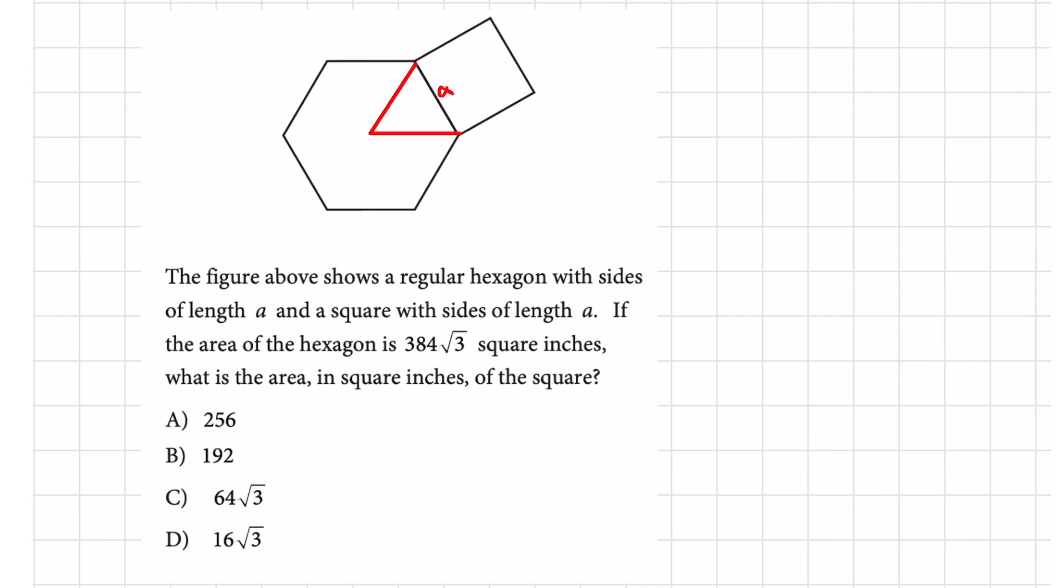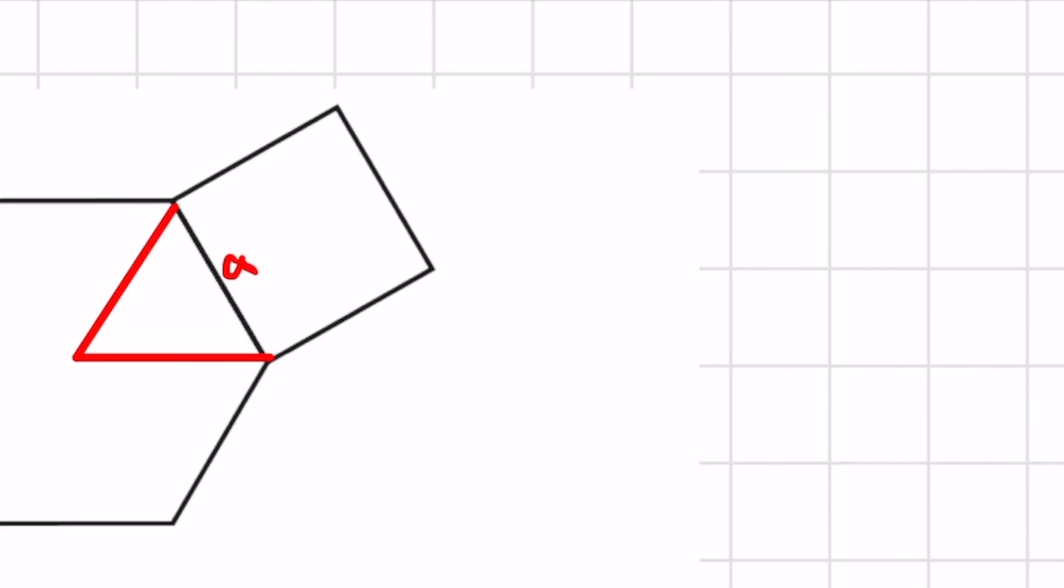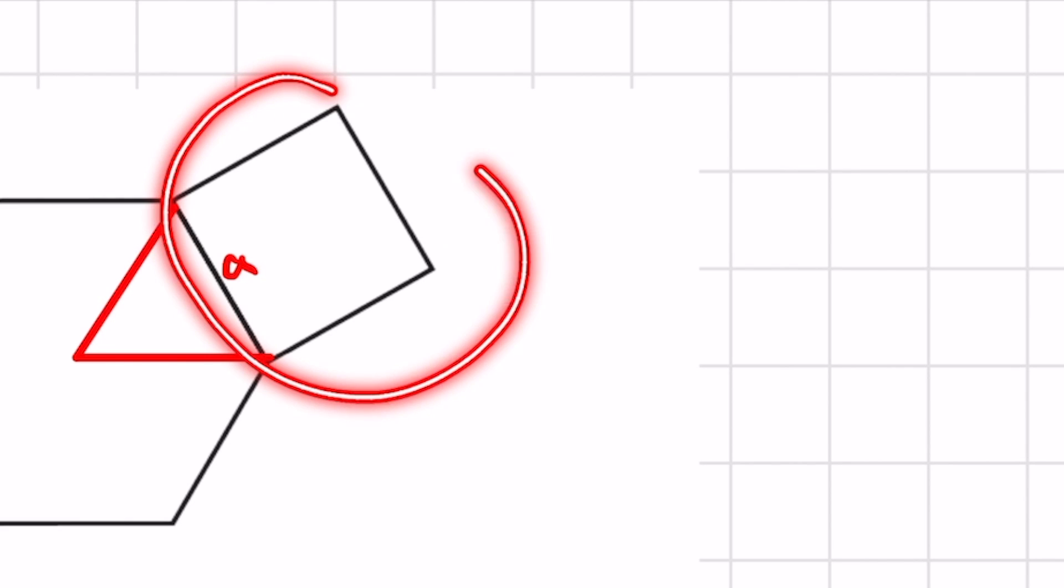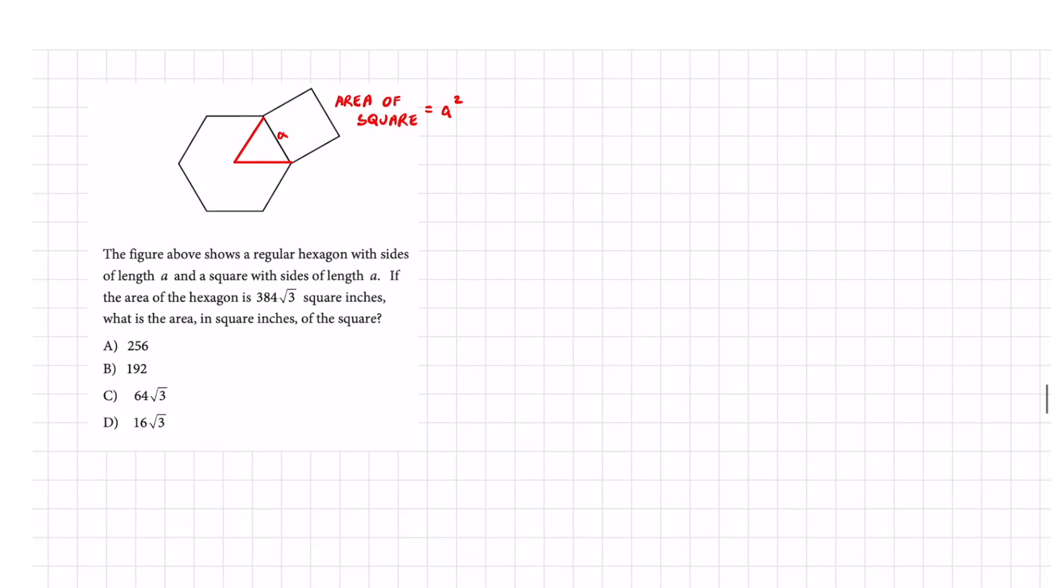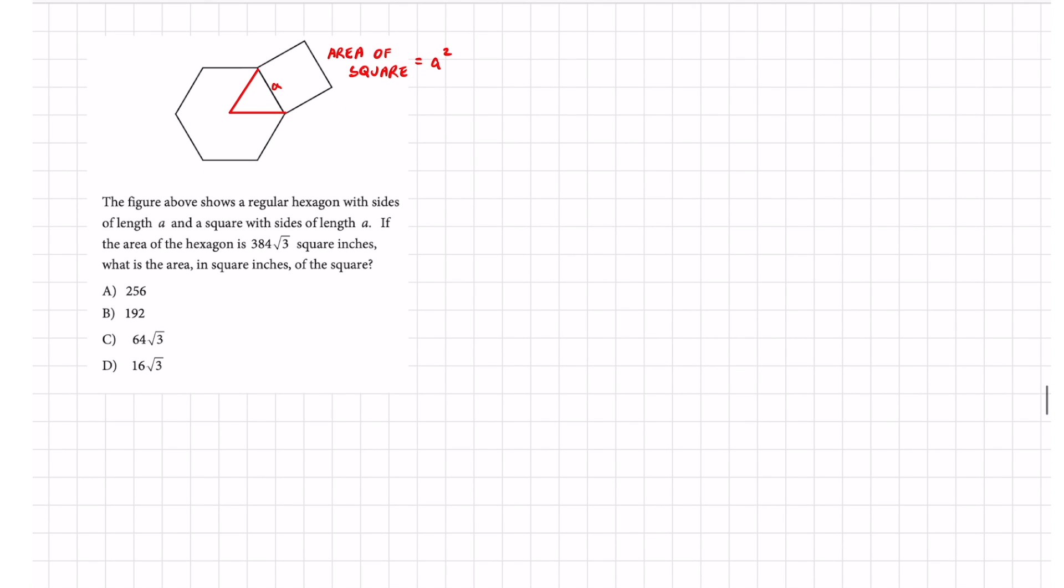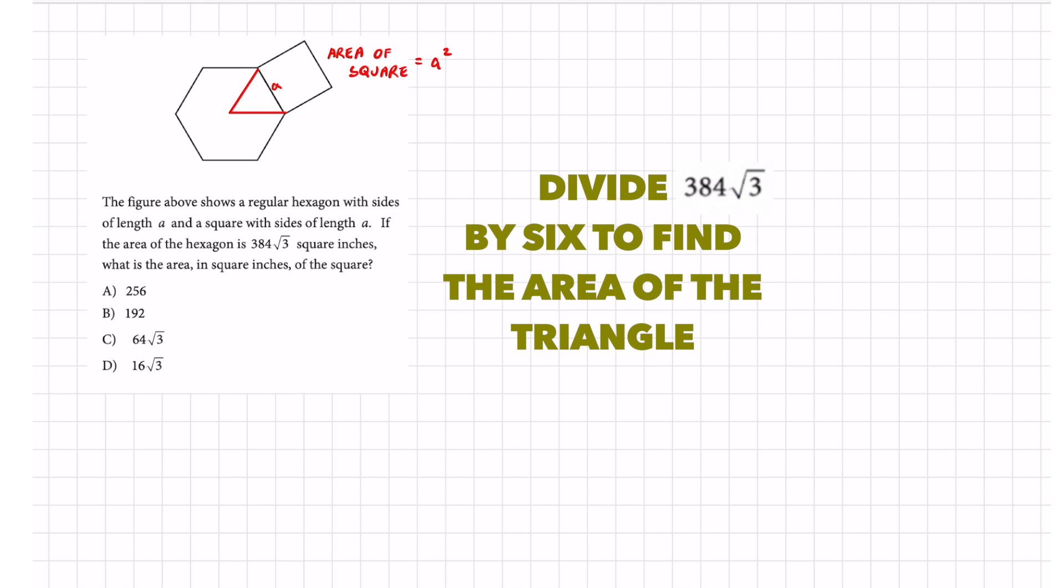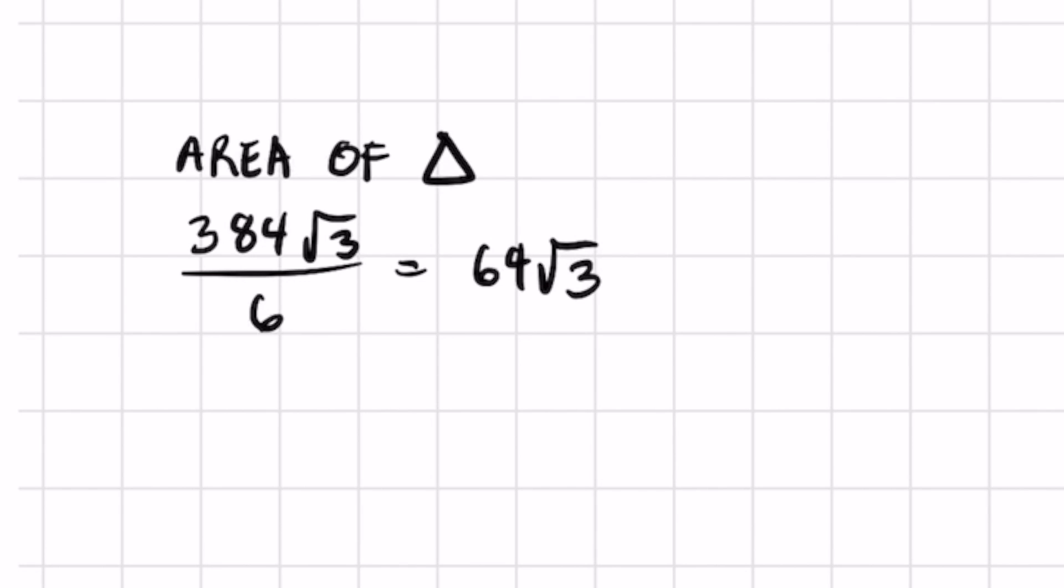The last given information that we have is that the area of the hexagon is 384 root 3. We are trying to find the area of this square which can be represented with the expression A squared. To start this off we need the area of this little triangle right here and we could do that by just taking 384 root 3, divide that by 6. As we mentioned, there's six equilateral triangles in there. We're going to need that value later.